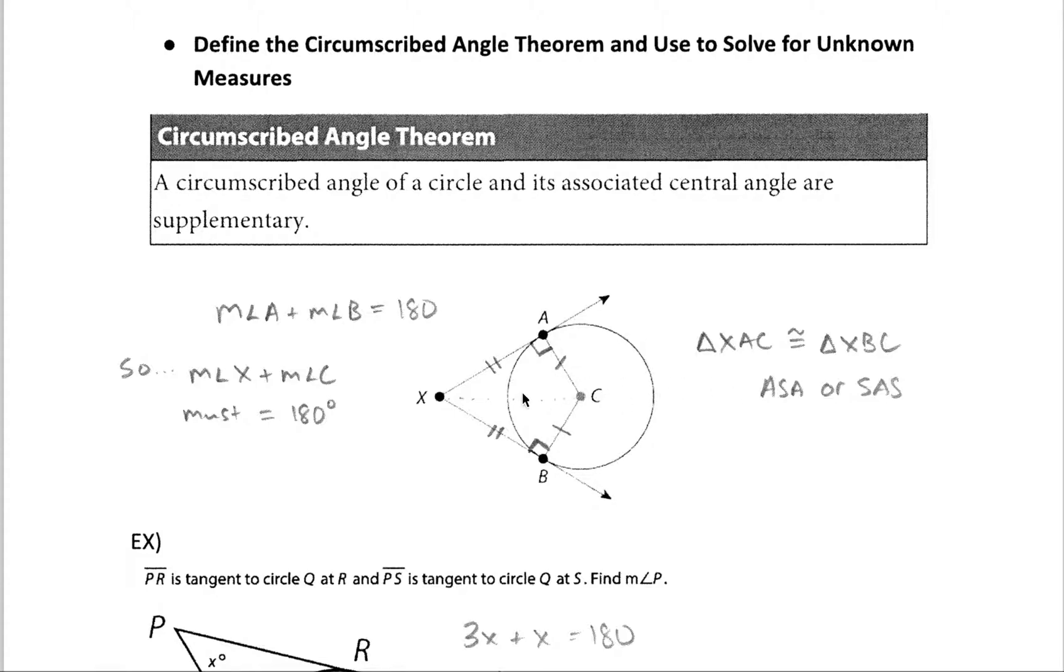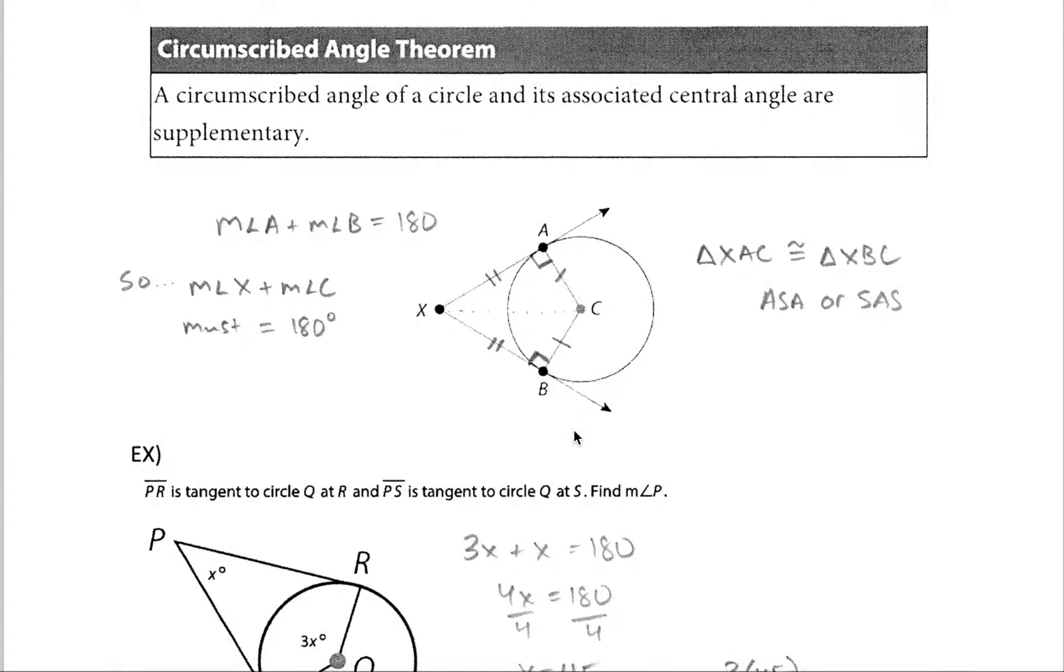I mean we could go even crazier and say that this imaginary line is probably bisecting this angle, therefore we have angle-side-angle, or we have side-angle-side, but really because they're right triangles, and because the leg and the hypotenuse are the same, we just call that hypotenuse length congruency.